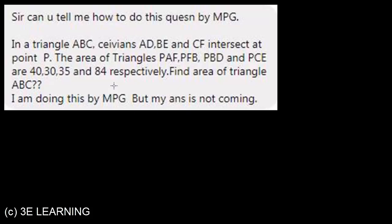Please read the question and try to solve it. The question is in front of you. In a triangle ABC, cevians AD, BE and CF intersect at point P. We have four different areas given and we need to find the area of triangle. There is one request: please try to use MPG in this question. I would say pause the video and solve the question and please try to use MPG concept in this.